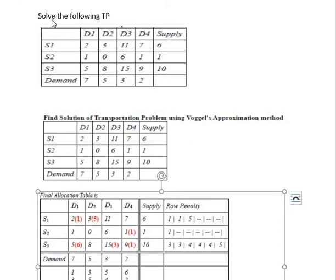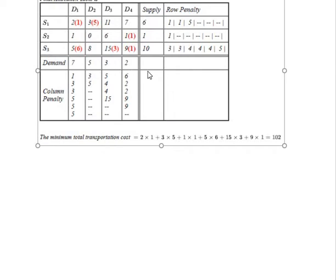Now we have a problem: Solve the following transportation problem given in the table. First, we find the initial basic feasible solution using Vogel's Approximation Method. From the allocation table, we can find the minimum total transportation cost, which equals 102. This is the initial solution. Next, we can find a better solution using the MODI method.